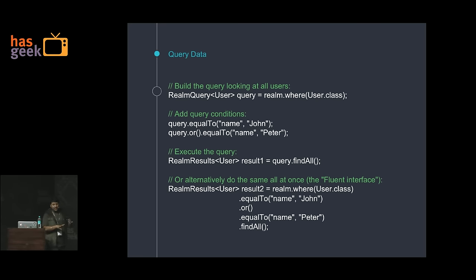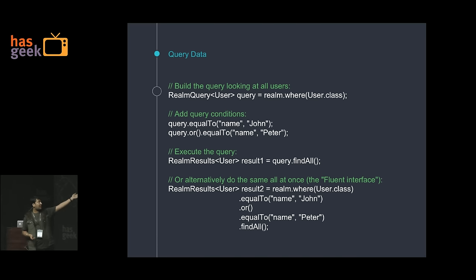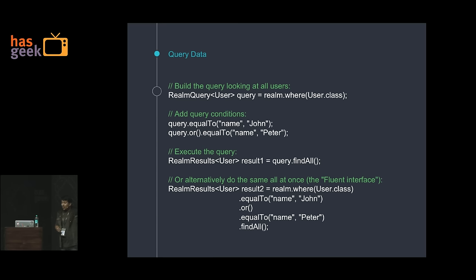To query data, you take the object and say findAll(). You say realm.where() and define which class you want to query, like User.class. You can define conditions — for example, the name should be John or the name should be Peter. You can combine operations — everything you used to do in the SQL world is possible in Realm. You can batch all the queries at once in a fluent interface. This is a zero copy read, so you will get the results instantly.